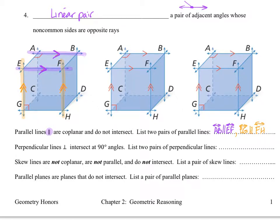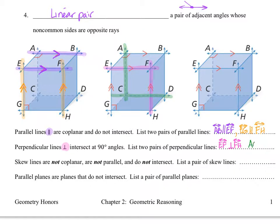Moving on to the second cube and the second statement, this one is talking about perpendicular lines — you can see the symbol for perpendicular right here. Perpendicular lines intersect at 90 degree angles. We're going to list two pairs of perpendicular lines. The first one is line EF perpendicular to line FH — both of those lines are on the front of the cube. Moving to the back of the cube, line AC is perpendicular to line CD.